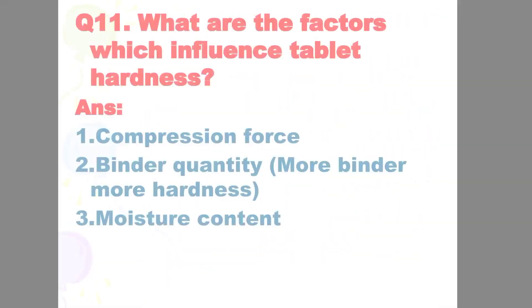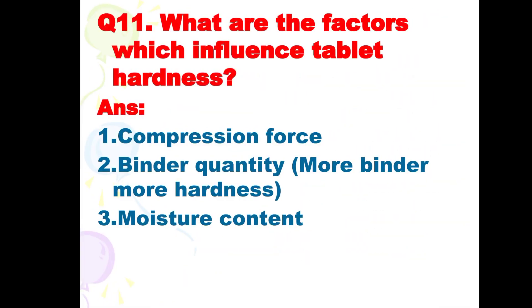Next is: what are the factors which influence tablet hardness? The answer is: number one, compression force; number two, binding quality — more binder means more hardness; and number three, moisture content.